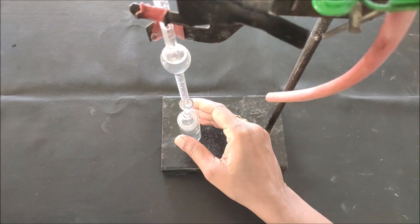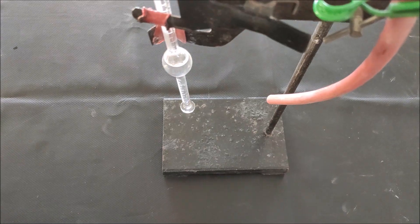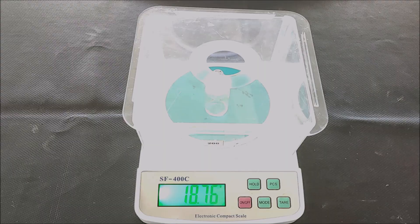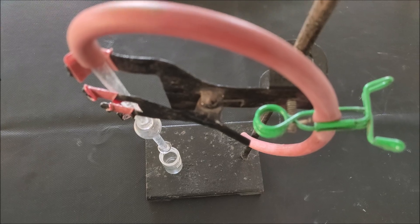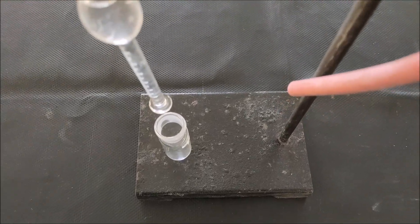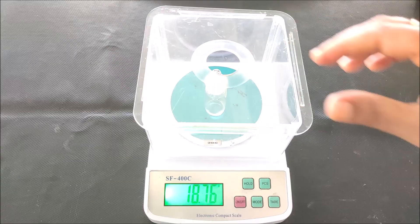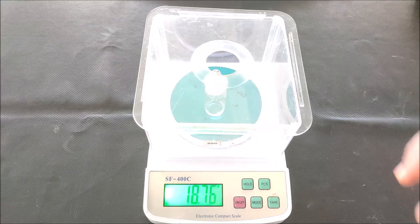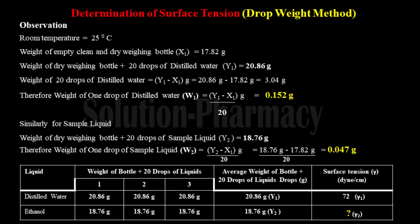In the weighing balance, you can see the weight is 18.76 grams. Record this weight as the weight of the weighing bottle with 20 drops of sample liquid, that is ethanol. Again repeat the step and record all the readings. Next, calculation of surface tension by drop weight method.